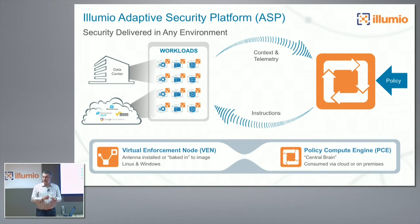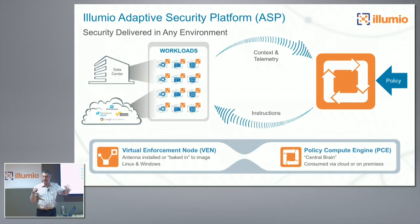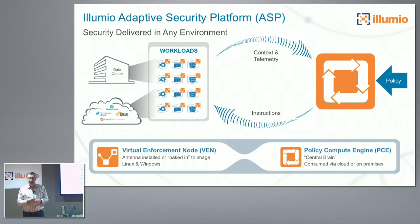You could have one very simple policy line — like 'all dev machines can talk to dev machines.' Very simple. But there could be hundreds of thousands of instructions necessary to actually implement that policy. It's the PCE's job to figure all that out, calculate it, and disseminate those instructions back out to the VENs.